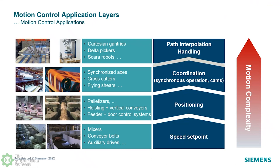If you go up to another level, you have what we call path interpolation — mostly handling applications, especially robots. That's where you see a 2D delta picker, SCARA robot, or articulated arms, mostly for handling and pick-and-place, picking stuff up and moving into a 3D Cartesian space to another position. That gets a little more complex. That's how I like to start talking about motion control applications.